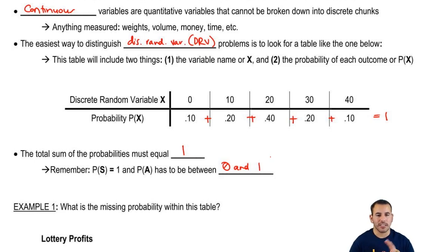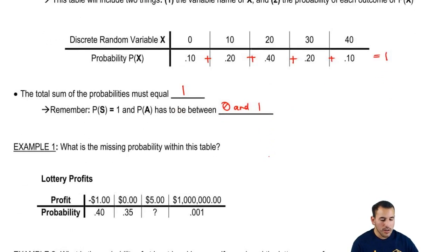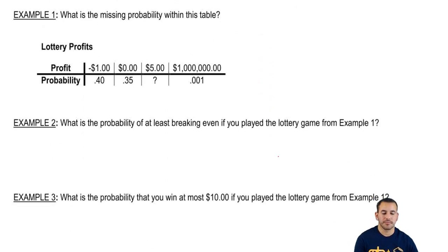So let's go ahead and do a quick example, just to kind of tie this stuff in. What is a missing probability within this table? So we have three given probabilities. One is missing, and this is a discrete random variable distribution. So we see that we have all the possible outcomes for a lottery profit. So you either lose a dollar, you break even, you win $5, and these are profits. So technically that gain was kind of $6, because you lost one when you put money in. So you profit $5, and then you profit $1,000,000. And there's a probability associated with each of those.